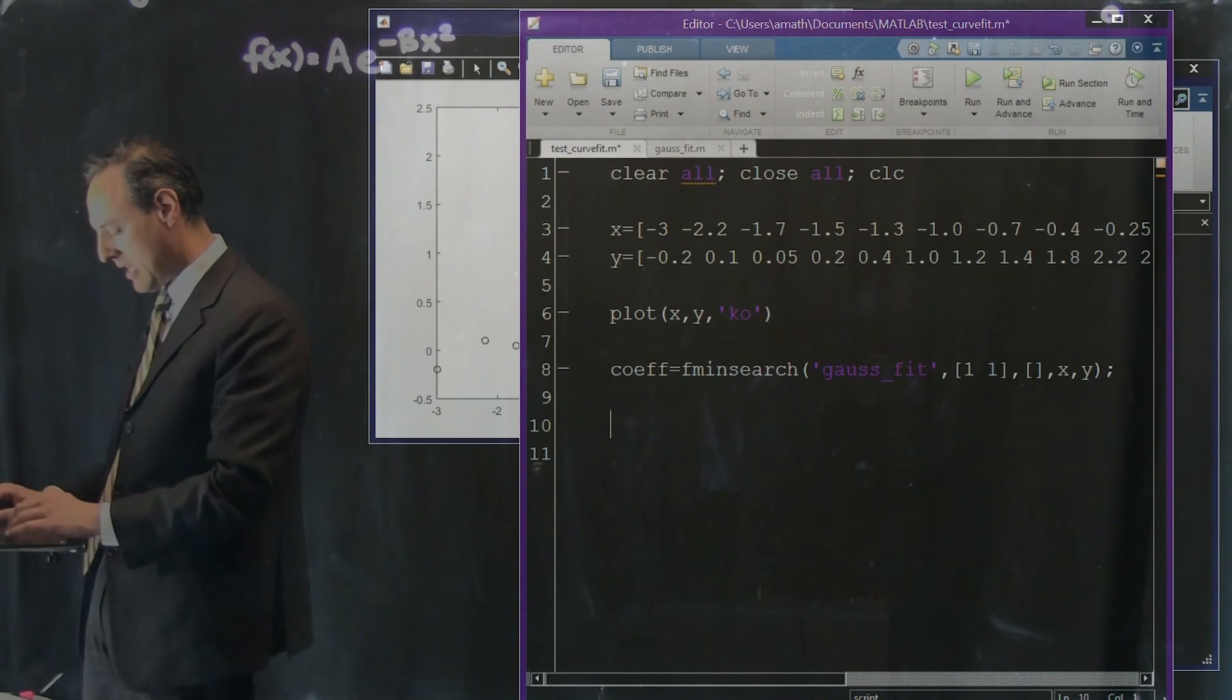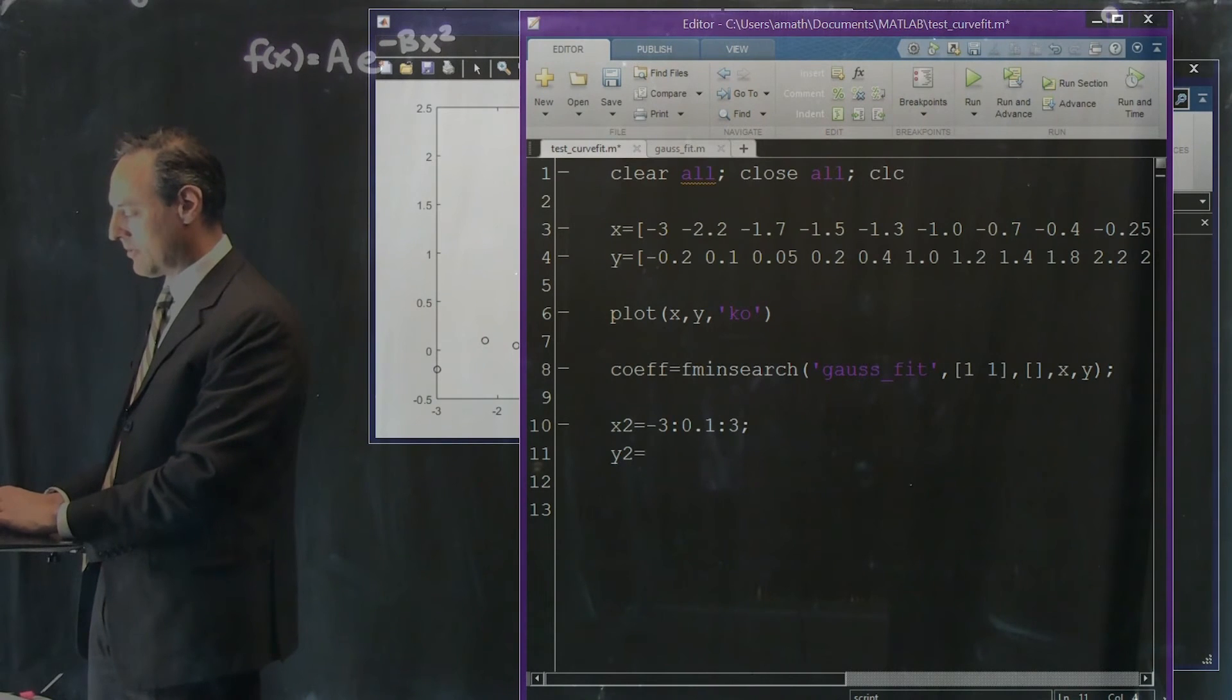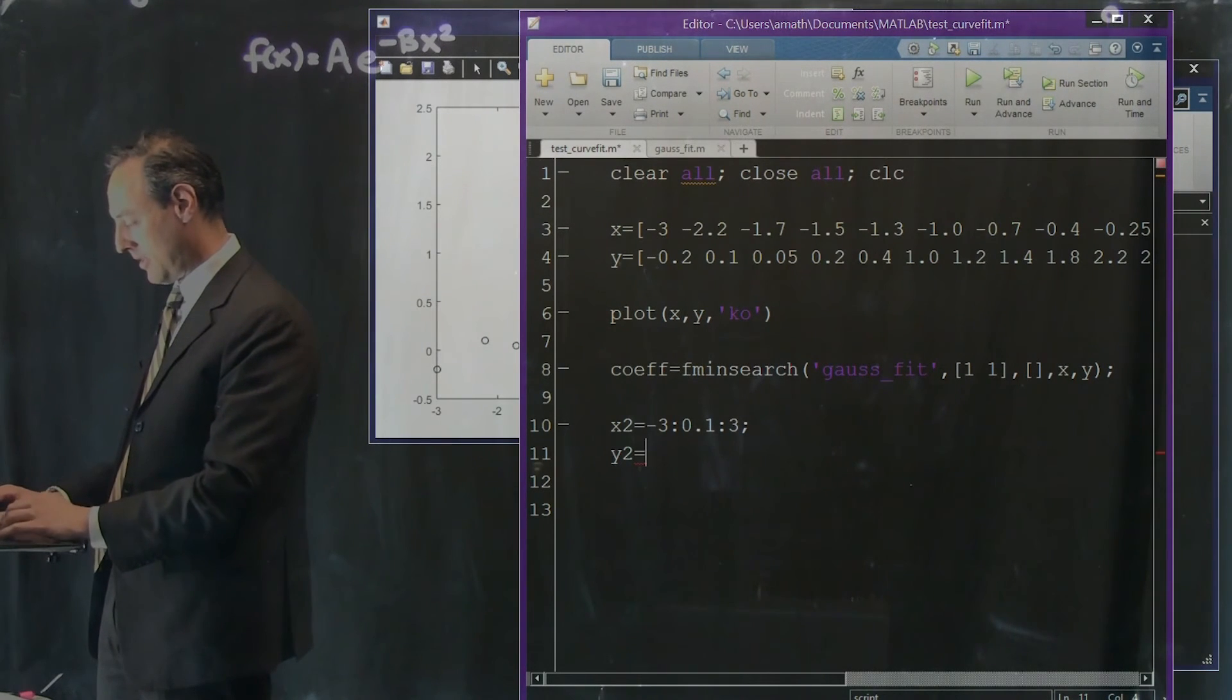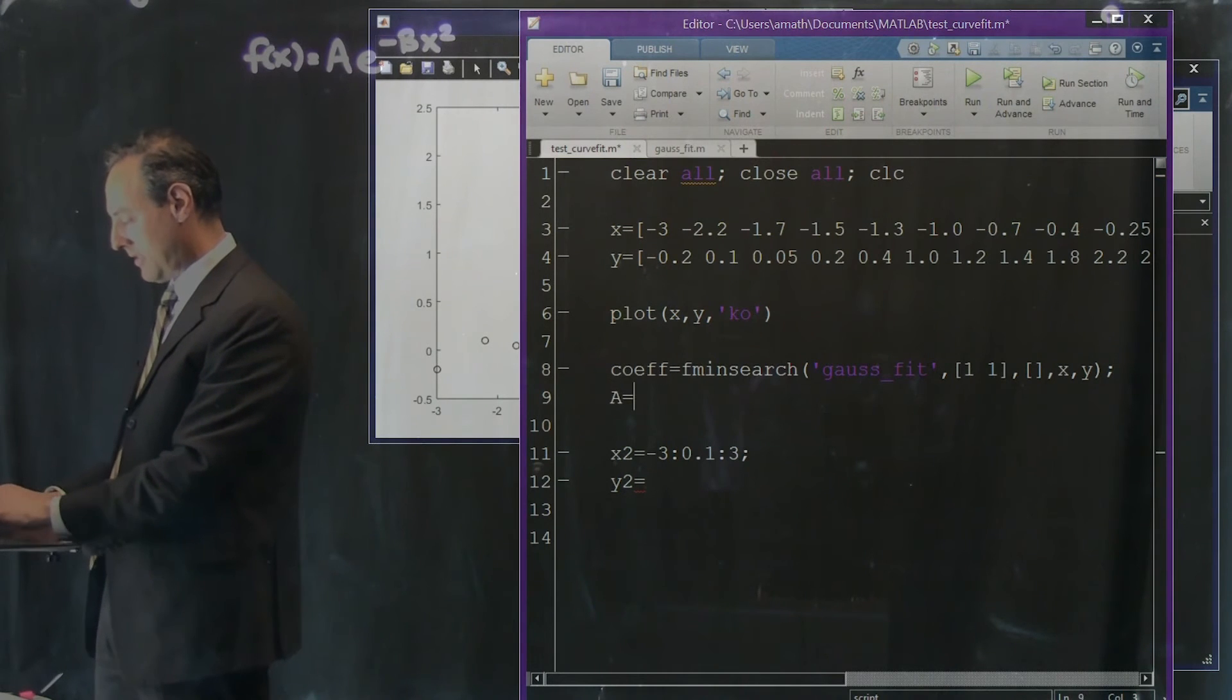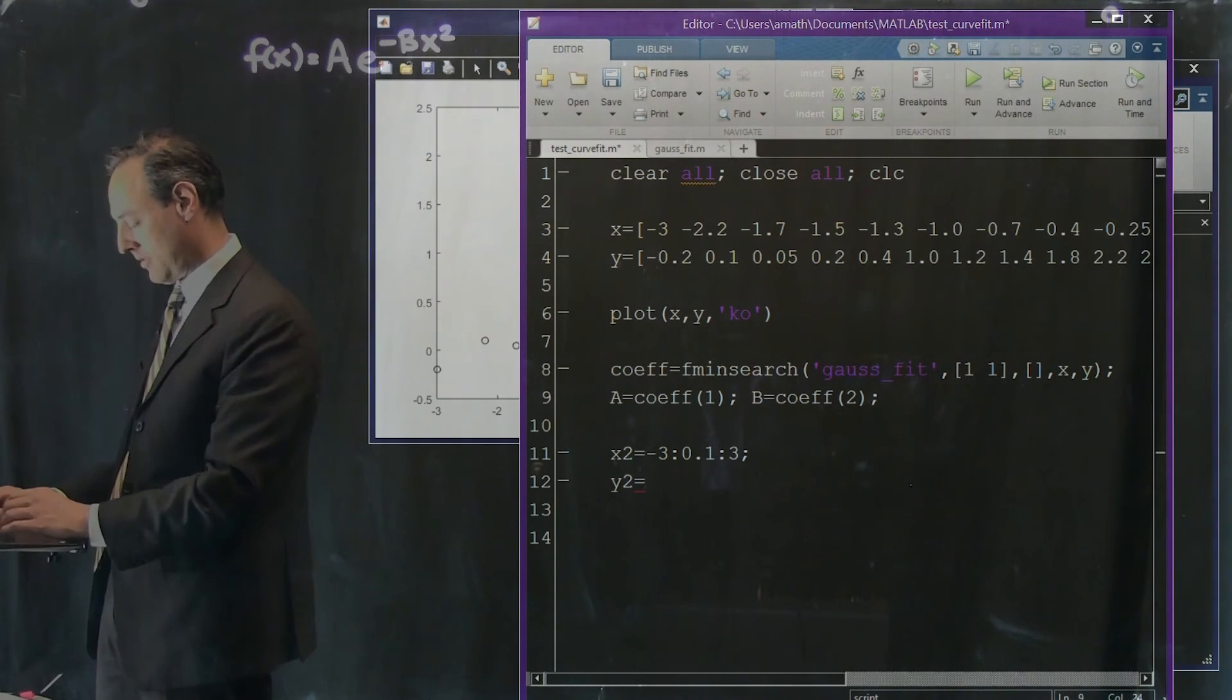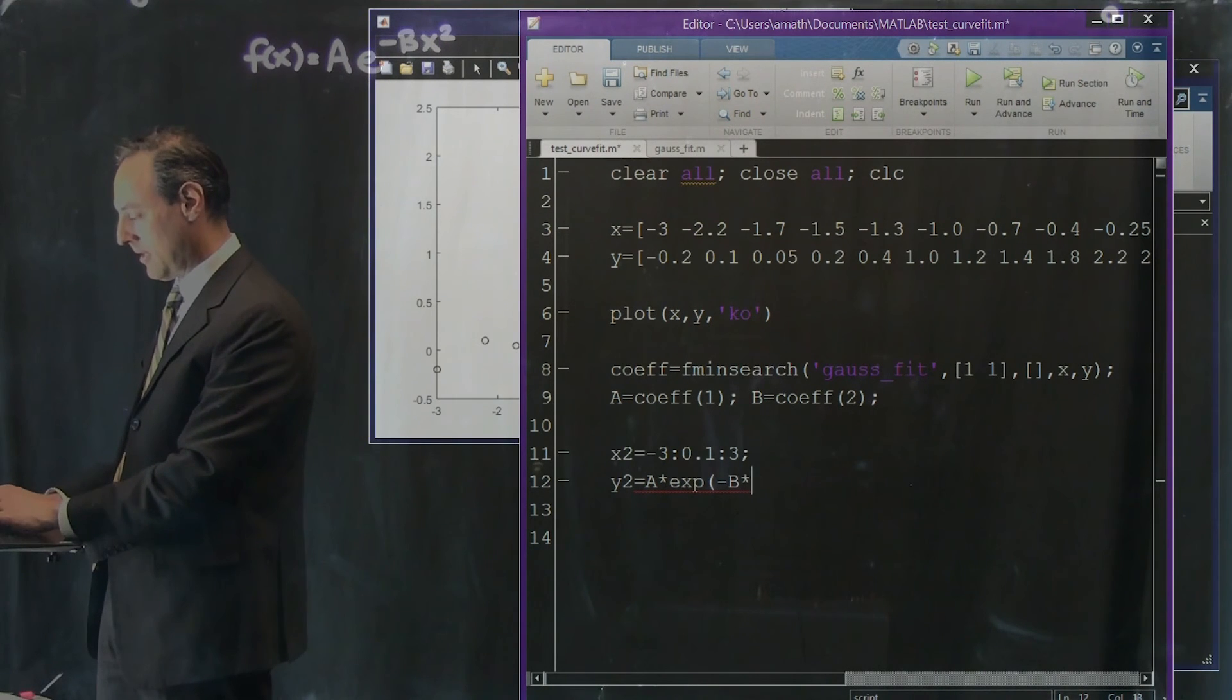Okay, so now I can say, well, my x2 values are going to go from negative 3 in steps of 0.1 to 3. And my y2 values are going to be, so if you remember here, a is equal to the first component cof, b is equal to the second component cof.